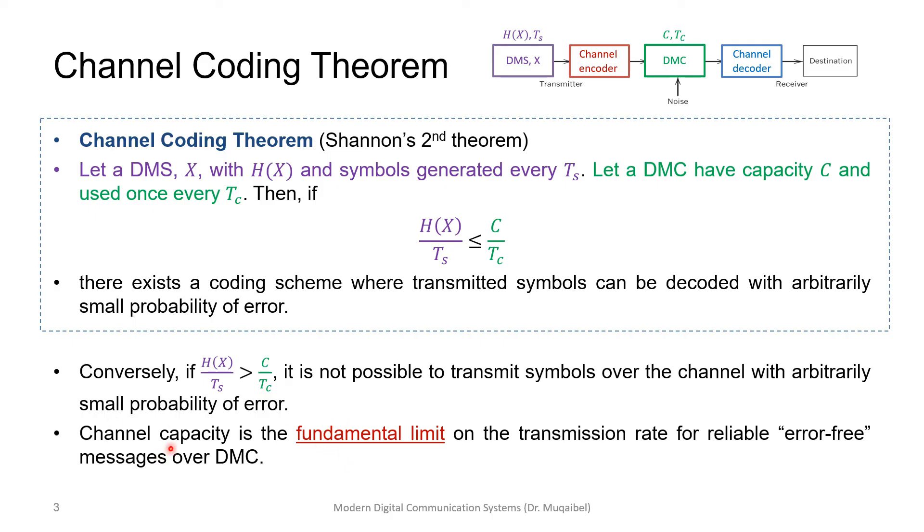Channel capacity is the fundamental limit on the transmission rate for reliable, error-free messages over a DMC. That's the channel coding theorem. Please take a moment to think about it. It simply says: As long as we are not exceeding the capability of the channel, we can design a proper coding that allows the data to go through the channel without having a large probability of error—the probability of error can be made arbitrarily small.